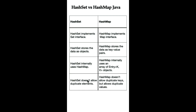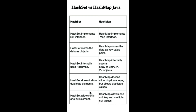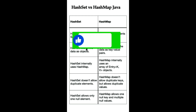HashSet does not allow duplicate elements — if you try to add a duplicate, it will not be added. HashMap does not allow duplicate keys as each key must be unique, but it allows duplicate values. HashSet allows only one null element, whereas HashMap allows one null key and multiple null values.